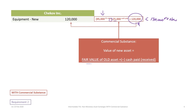The key difference between commercial substance and non-commercial substance situations: with commercial substance we use the fair value of the old asset, whereas without commercial substance we use the book values or carrying values of the old assets plus or minus cash received, then compare that to the fair value of the new asset. So we debit equipment for $120,000.